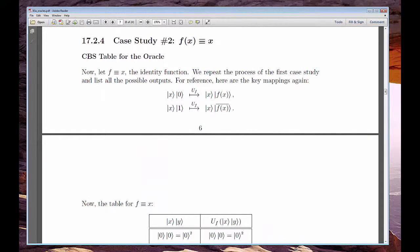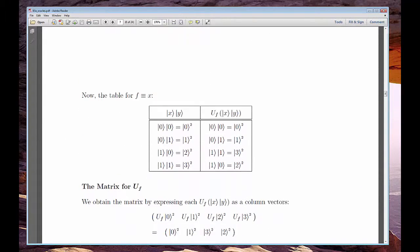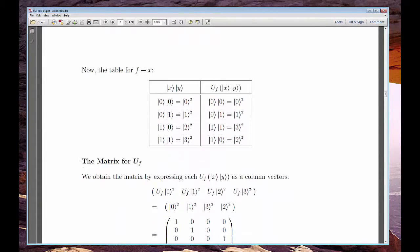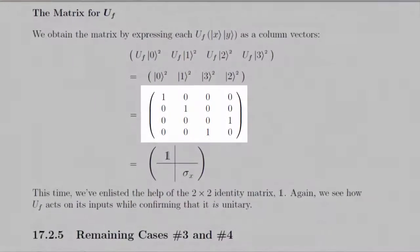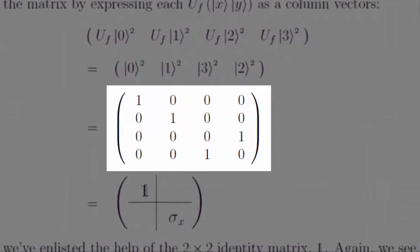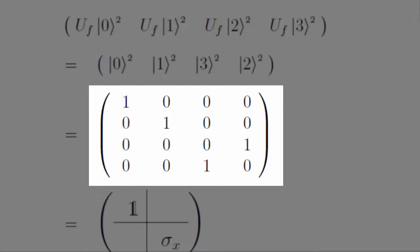One of those four functions is the identity, f of x equals x. From the truth table for the oracle, we easily produce its matrix. As you can see, it's unitary, which, by the way, we suspected. After all, an oracle is always its own inverse. But, it's nice to confirm here.